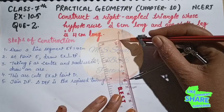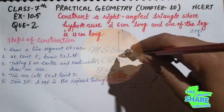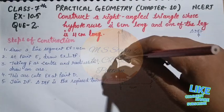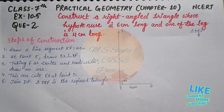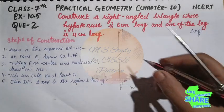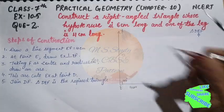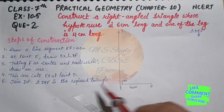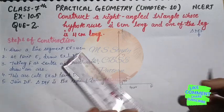Now you need to keep the compass point at F, and where the arc cuts the perpendicular line, that point is D. You need to mark the point D. Now join DF.